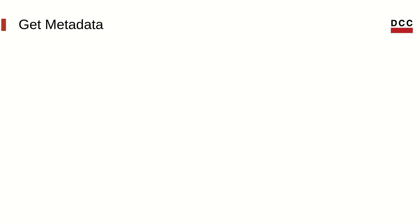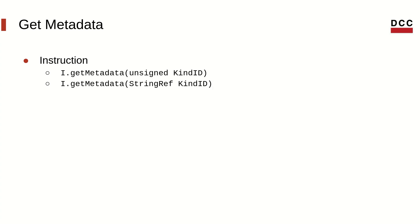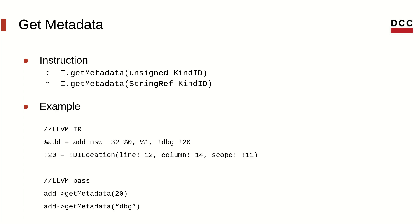Some components of the IR provide methods to get metadata attached to these components. Let's take a look into an instruction. An instruction provides, among others, methods to access metadata by its index or by its name. For example, this add instruction has metadata with index 20. We can access such metadata using index 20 or using the name dbg. Both will give us the same return, which is a source code location.